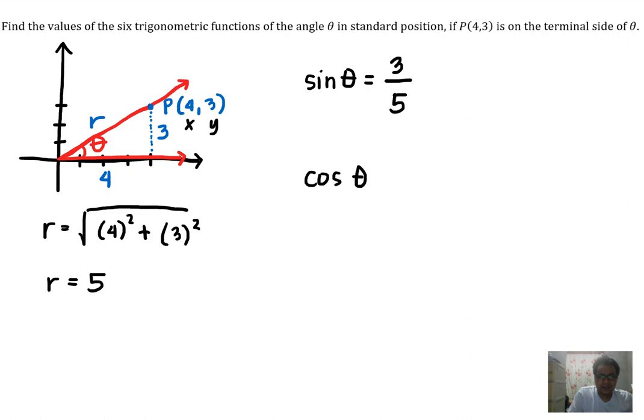Cosine of theta is X over R, so that is 4 over 5. Then tangent of theta is Y over X, so that is 3 over 4.